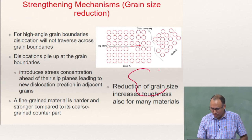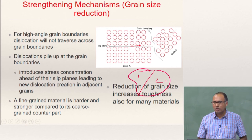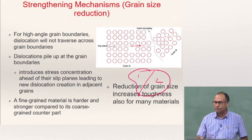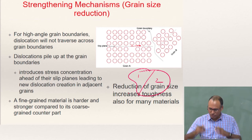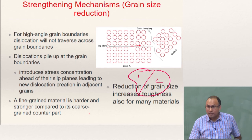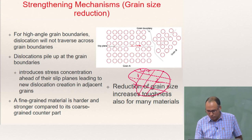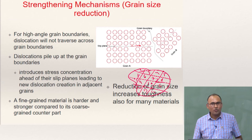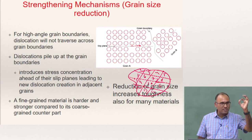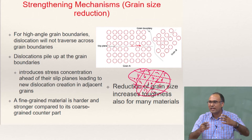Suppose you have this material with grain 1 and grain 2 — the grain boundary area is a certain length. Now, if I want to increase the grain boundary area, instead of 2 grains I can make 15 grains in the same volume. What happened? I have reduced the grain size, and as a result the total grain boundary area has increased.